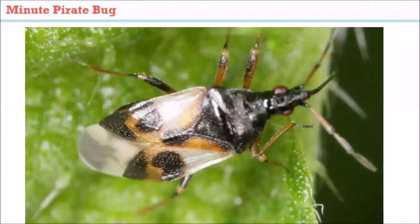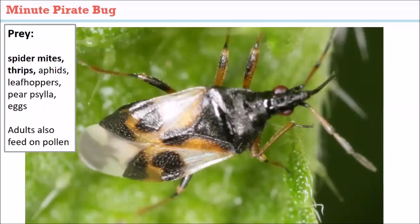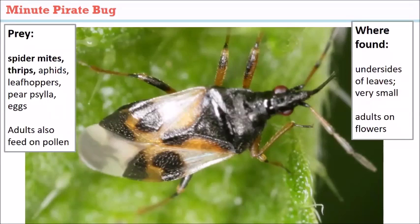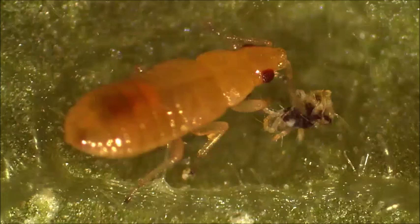The minute pirate bug is kind of an unsung hero in the orchard. It's a tiny black insect — its name literally means minute — and both adults and young are predacious. It's one of the more important predators of spider mites and thrips. The adults also need pollen to help with mating and egg laying. You won't typically see them because they're so small and usually occur on the undersides of leaves where a lot of their prey is.